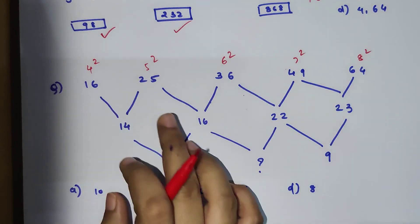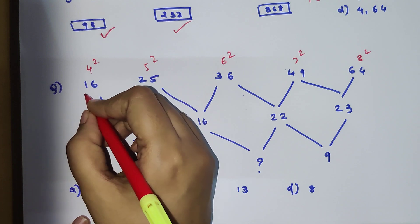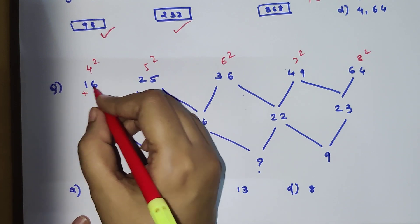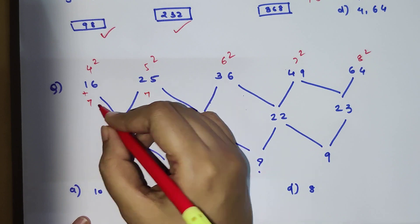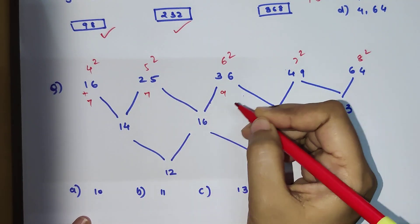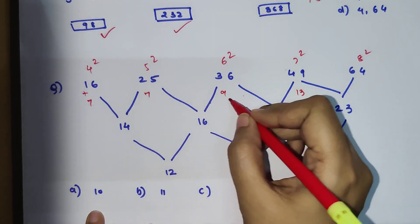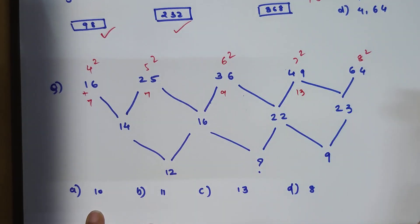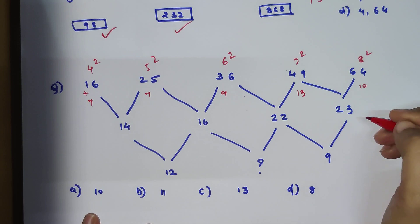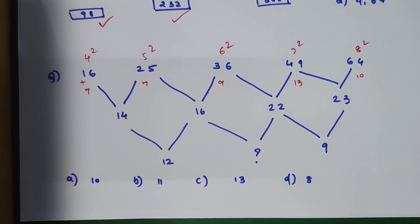When you subtract 16 from 25, your answer is 9, and 9 is nowhere close to 14. When you add it, obviously it's going way ahead. So let's try adding individual numbers. 1 plus 6 is 7, 2 plus 5 is 7, so 7 plus 7 gets you 14. Now again, 2 plus 5 is 7, 3 plus 6 is 9. When you add 7 and 9, you get 16. So this is 9 and this is 13. When you add 13 and 9, it gets you 22. This is 10. When you add 10 and 13, it gets you 23.